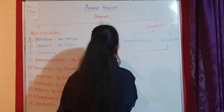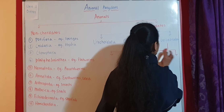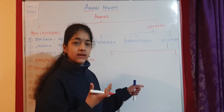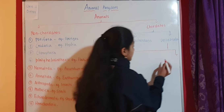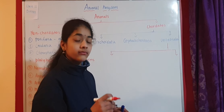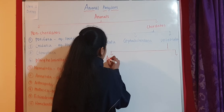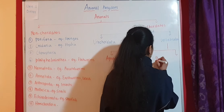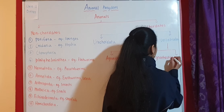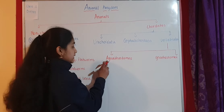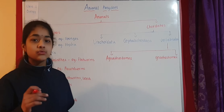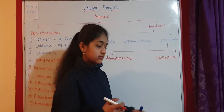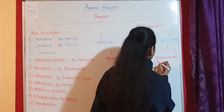Vertebrates are further classified into two groups based on the presence of jaws. If they don't have jaws, they are called Agnathostomes — the letter 'a' refers to absence, so agnathostomes means absence of jaw. If they have jaws, they are called Gnathostomes.